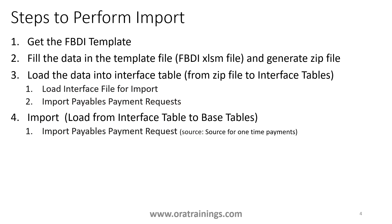Let's start with the FBDI approach. The process has four steps, similar to other FBDI imports. Step one: get the FBDI template. Step two: fill the data and generate the zip file. Step three: load the data into the interface table using an ESS request called 'Load Interface File for Import', providing the parameter 'Import Payable Payment Request' and the zip file. Step four: run the import job to load data from interface tables to base tables, selecting source as 'Source for One-Time Payments'.